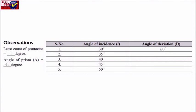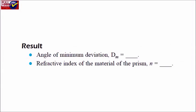Observations and Result: Angle of minimum deviation dm is [measured value]. Refractive index of the material of the prism n is [calculated value].